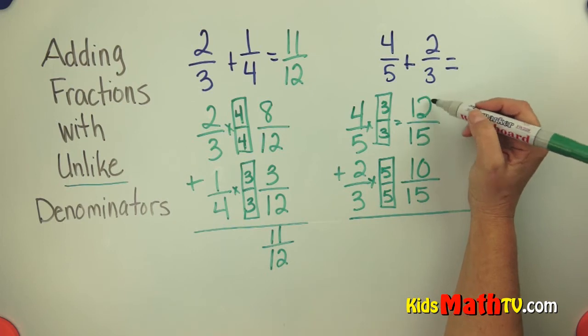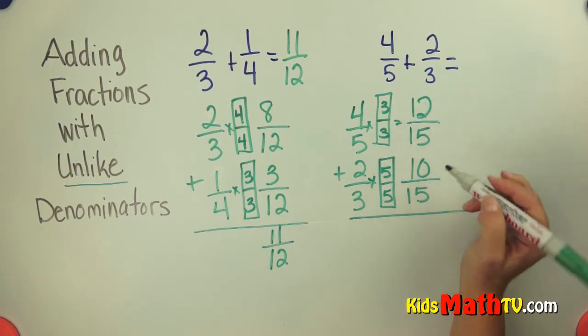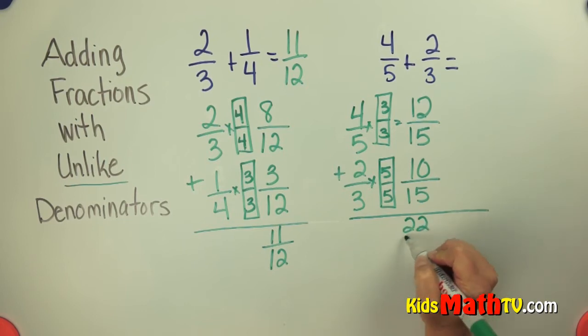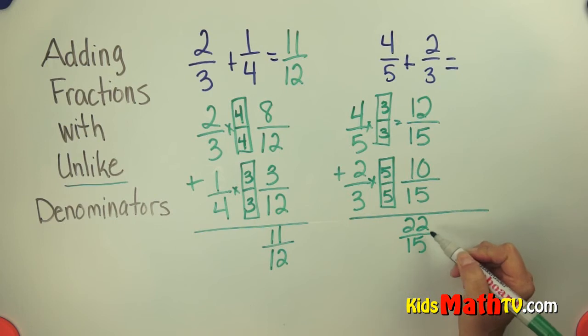So I have 12 fifteenths and 10 fifteenths. If I add those together, 12 and 10 is 22 fifteenths. Well, 22 fifteenths is an improper fraction.